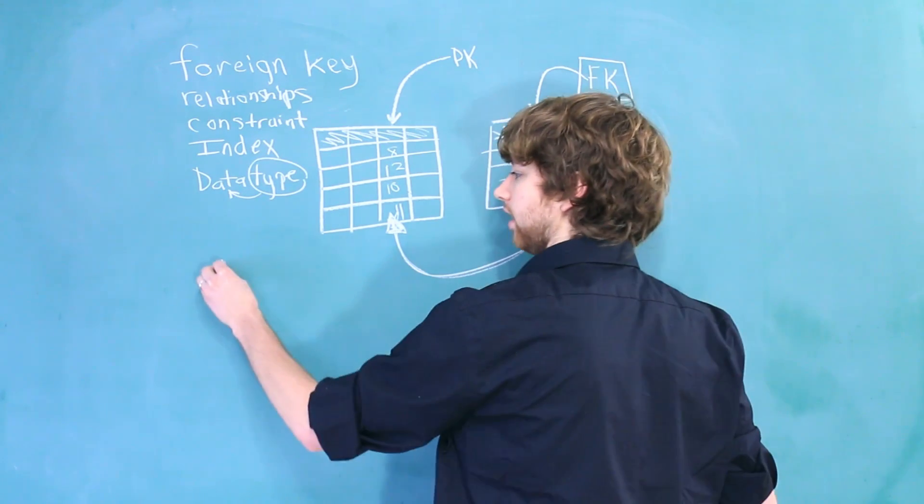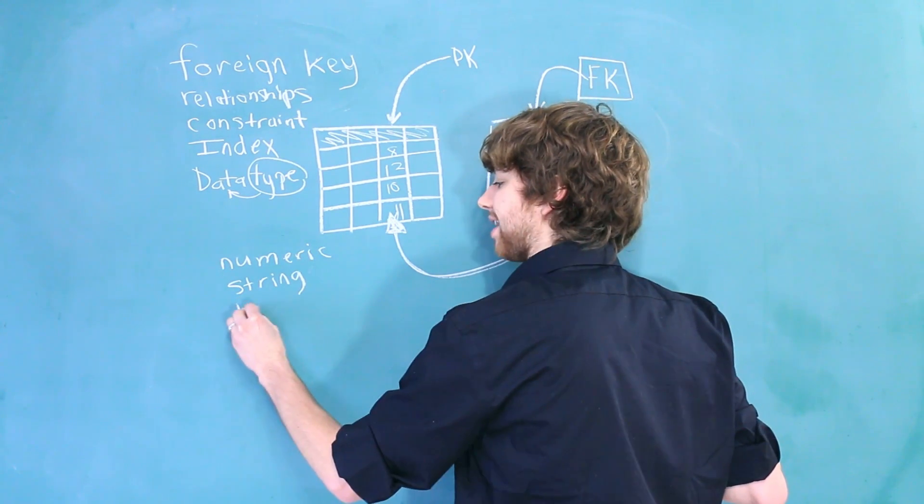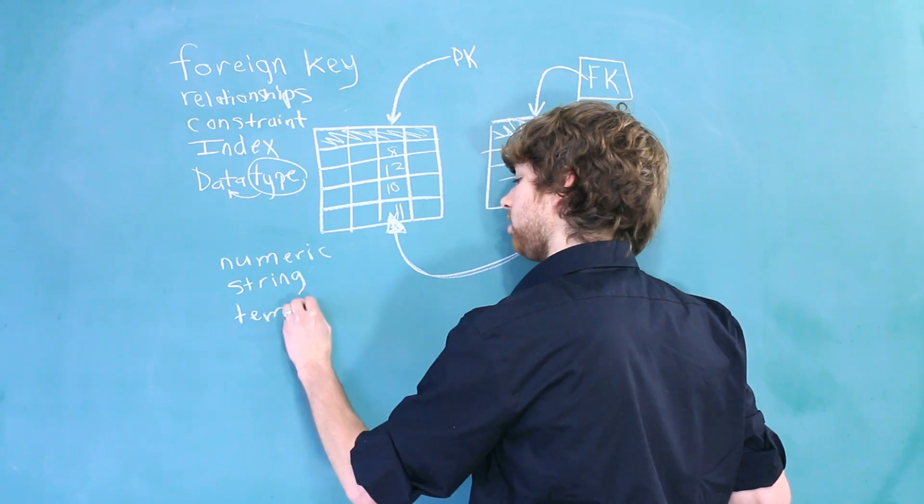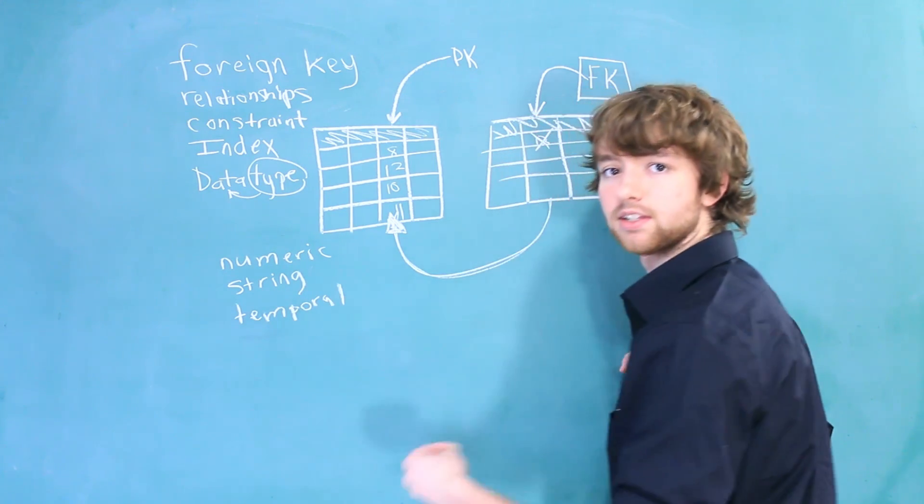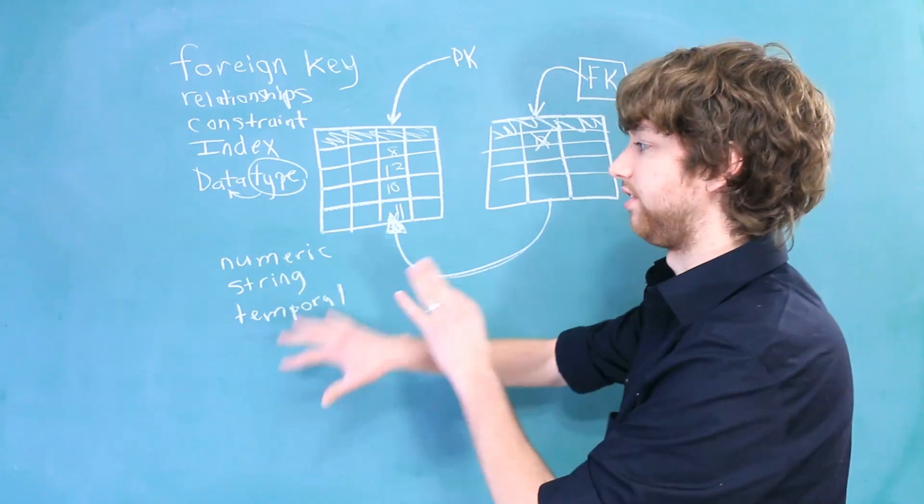There are a couple different categories. We have numeric data. That would be a number. We have string data. Then we have what some people call temporal data, and that's just dates and times.